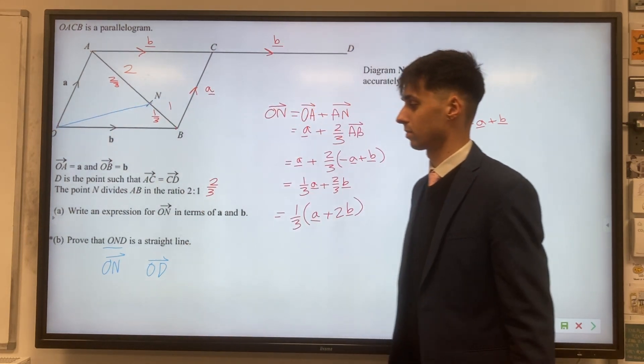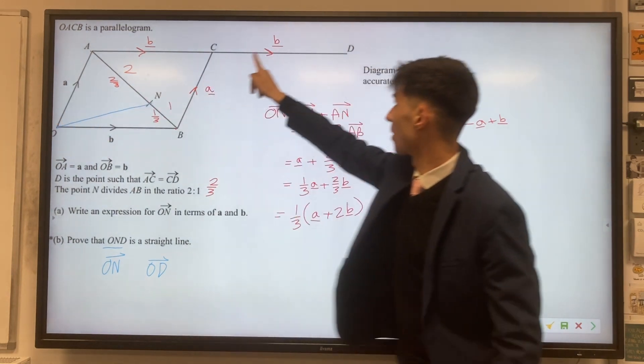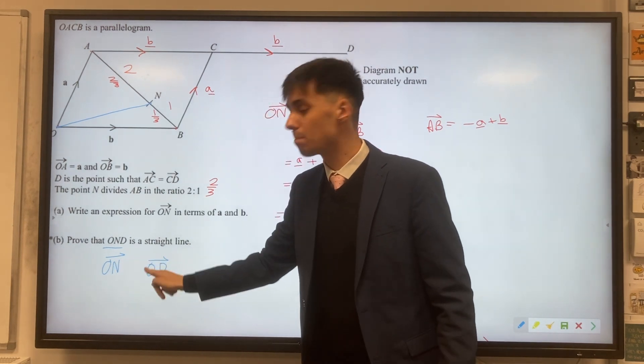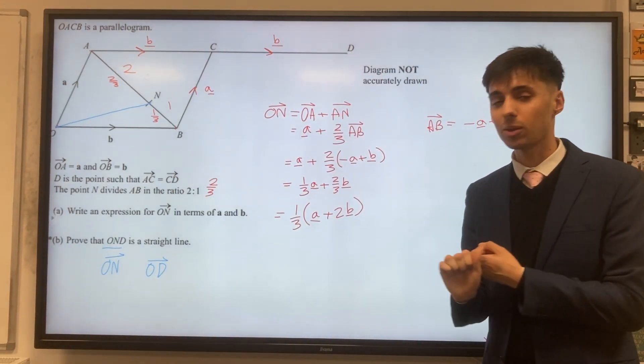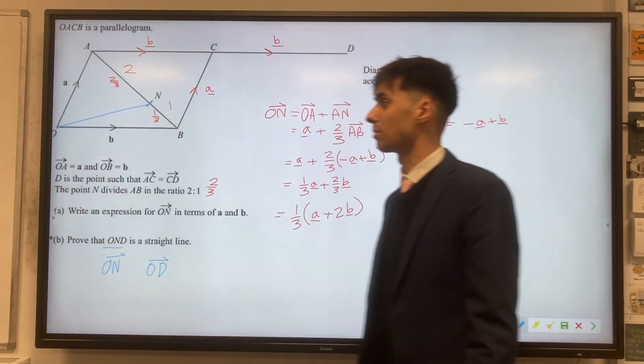Then we're going to look at the larger part. I'm not going to try and draw it from O to D. And we'd like to show that these two are scalar multiples of one another. That means they must be parallel, and the fact that they have the point O in common, that means they're in fact the same line.